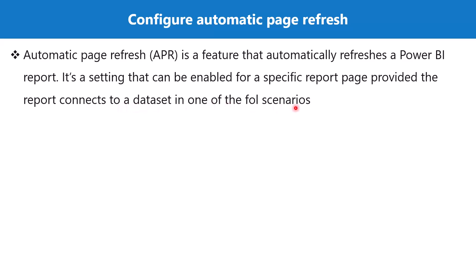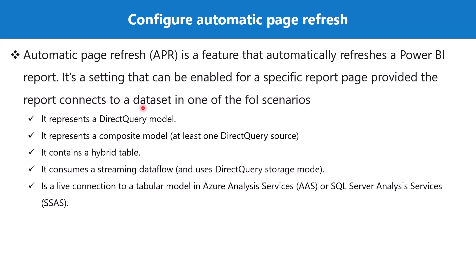Your Power BI report must connect to a dataset that supports one of five scenarios: either the model is Direct Query, or you have a composite model where at least one of the data sources is a Direct Query source.